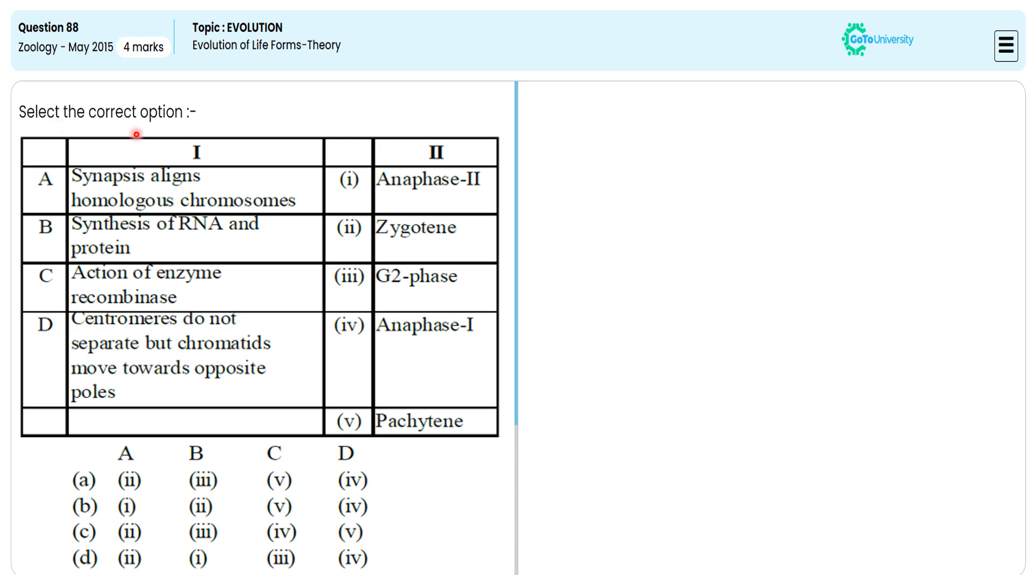In this multiple choice question, from the given options they are asking us to specify the correct option illustrating the correct match between the event and the substage of the cell cycle. For this, let me match each one of the events with the correct substage so that we can specify the correct matching answer.